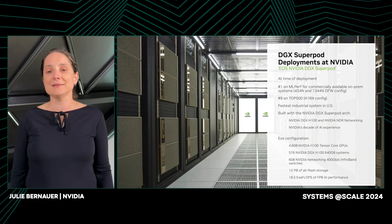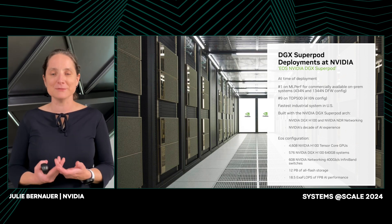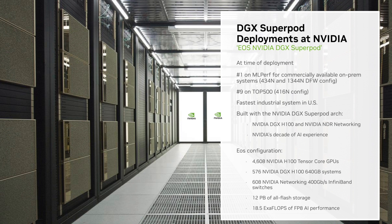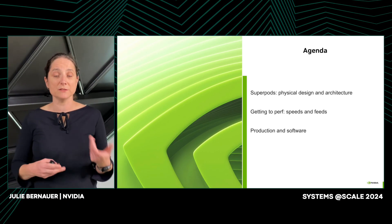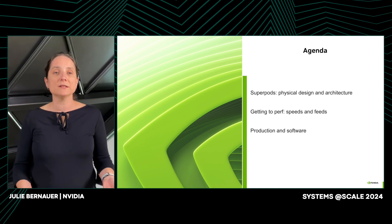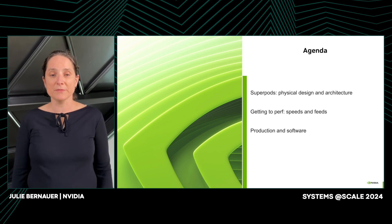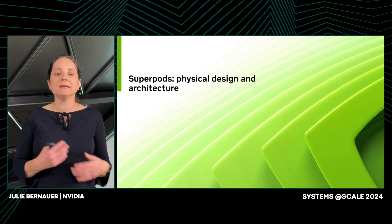Today I'm going to guide you through how we use EOS and build such a system — the reference design and how we do the end-to-end architecting behind it. Looking at the numbers: at the time of deployment, EOS was the first MLPerf benchmark supercomputer commercially available as an on-prem system. It was the fastest industrial system in the U.S., ranking number nine on the Top 500, built with NVIDIA DGX servers and just over 4,000 GPUs configured as a super pod. We'll go through physical design, then speeds and feeds, then production software.